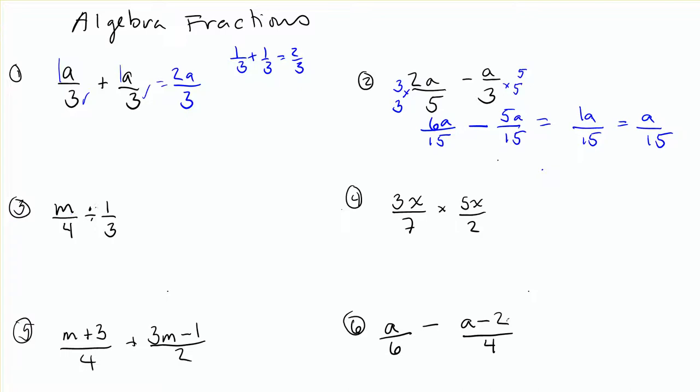Dividing fractions, remember the same rules apply for us, so we need to flip the second one over and times. So that becomes m over 4 times 3 over 1. m times 3, just timesing the numbers, and think if you want to, you can put an invisible 1 in front of the m. 1 times 3 is 3. The m comes along with it. And 4 times 1 on the bottom is just 4.